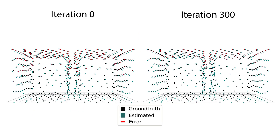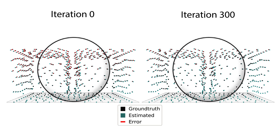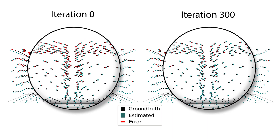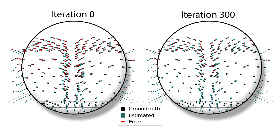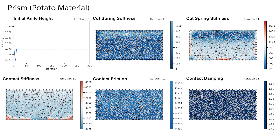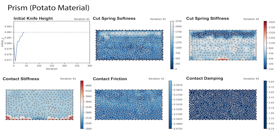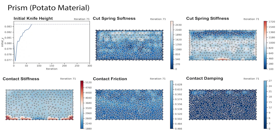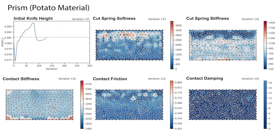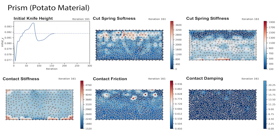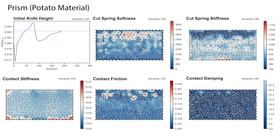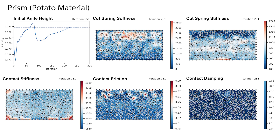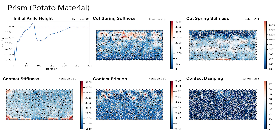After optimizing the simulation parameters, Dissect is able to predict the motion of the vertices much more accurately. Here, we visualize the evolution of the simulation parameters, which are tuned for each cutting spring independently, except for the initial height of the knife shown in the top left diagram.